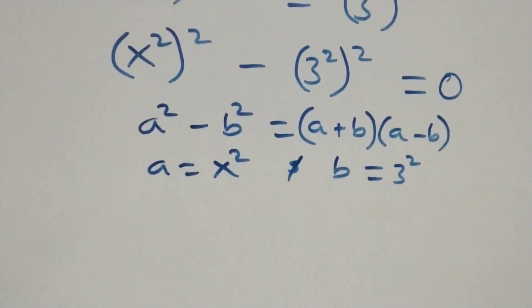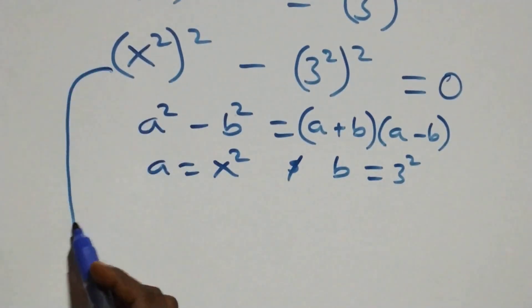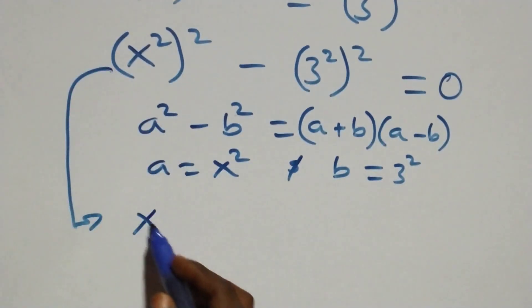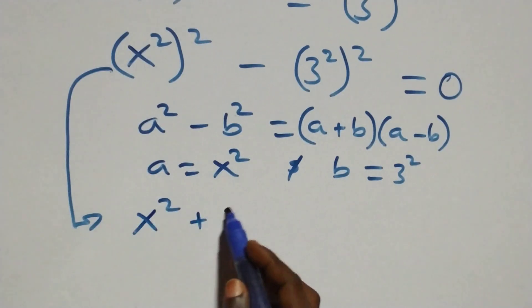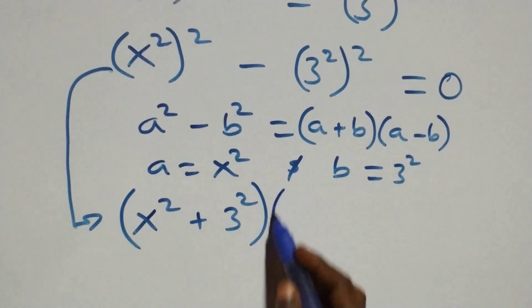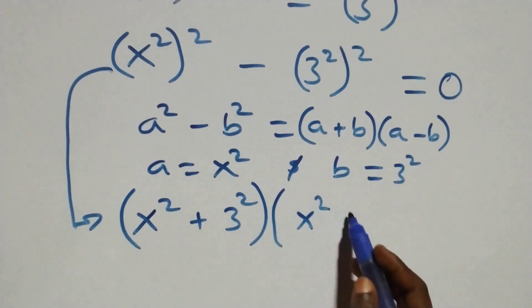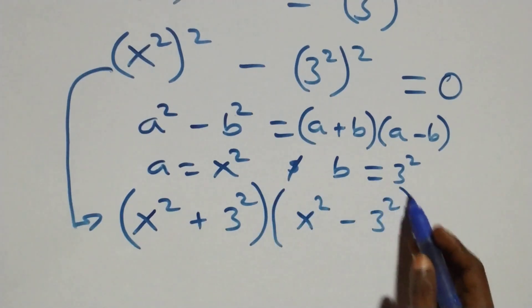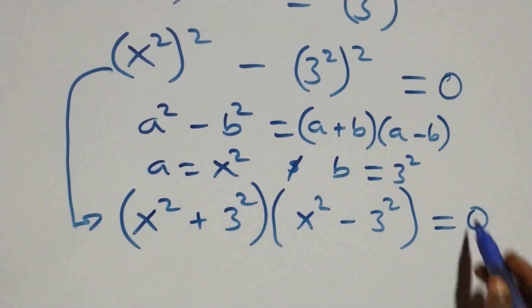What we have now becomes (x squared plus three squared) times (x squared minus three squared) equals zero.